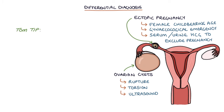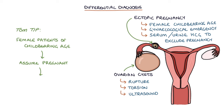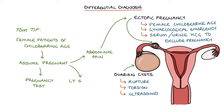A Tom tip for you: when seeing female patients of childbearing age, assume they are pregnant until proven otherwise with a pregnancy test. This is especially important in patients with abdominal pain where an ectopic pregnancy is a key differential diagnosis, or where you're requesting CT scans or X-rays. A serum human chorionic gonadotropin, or HCG, is typically part of the normal abdominal pain blood panel when clerking patients in A&E.